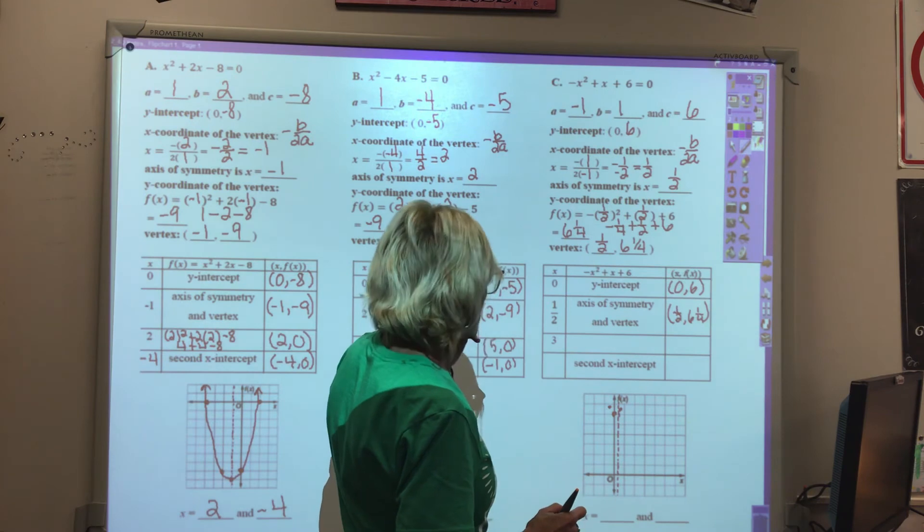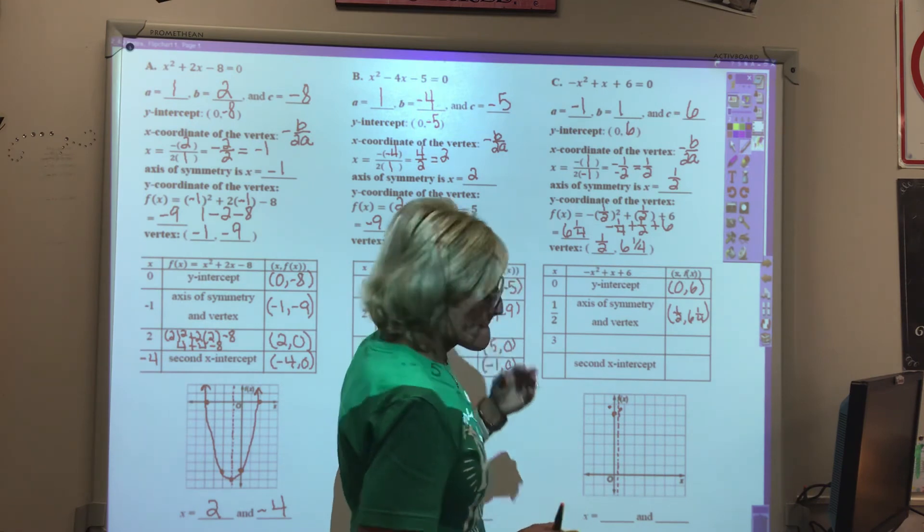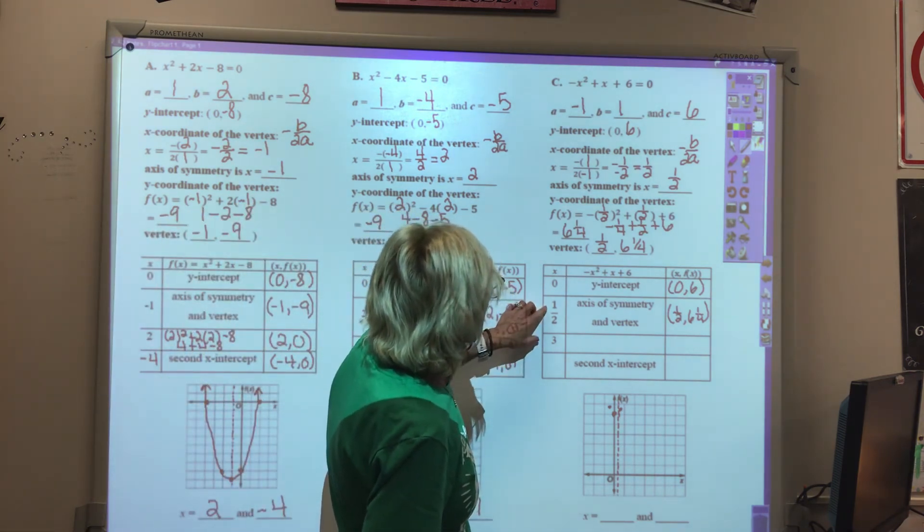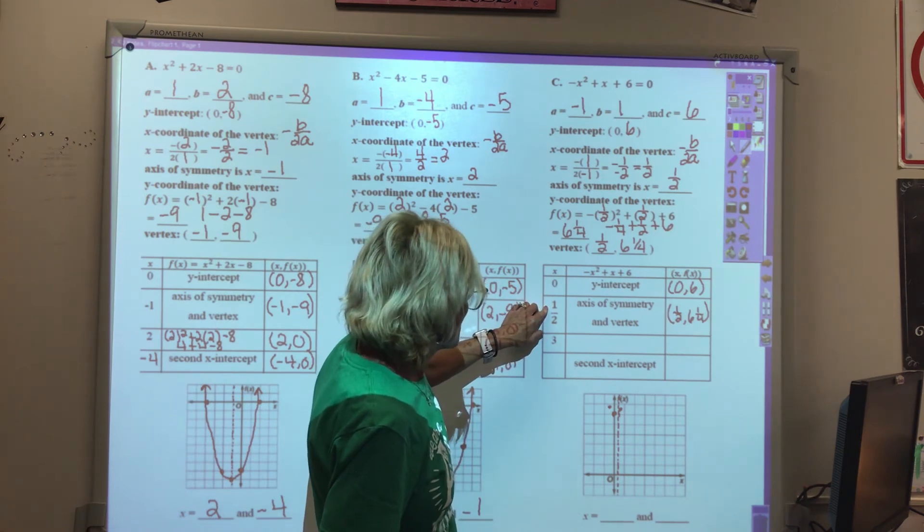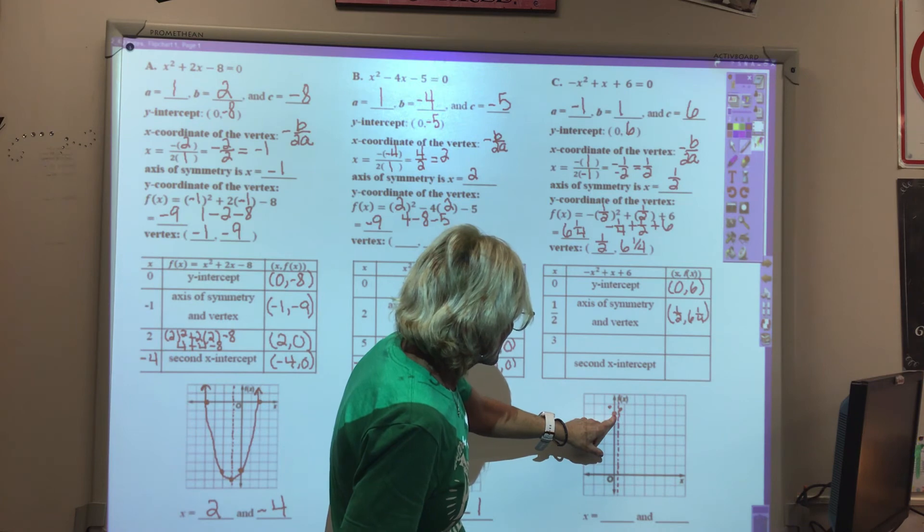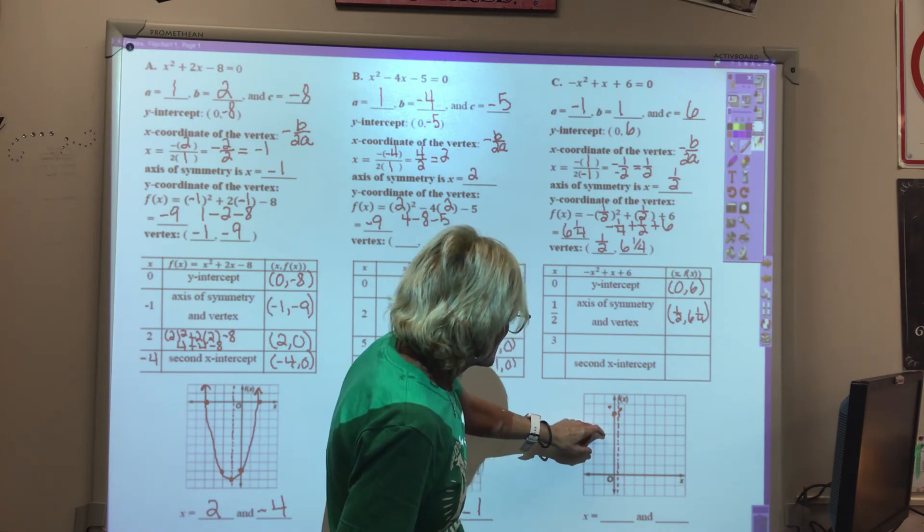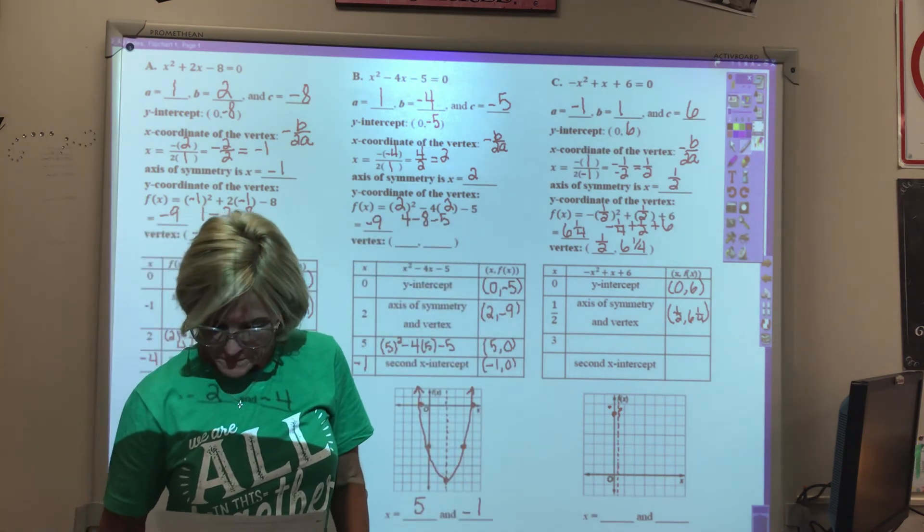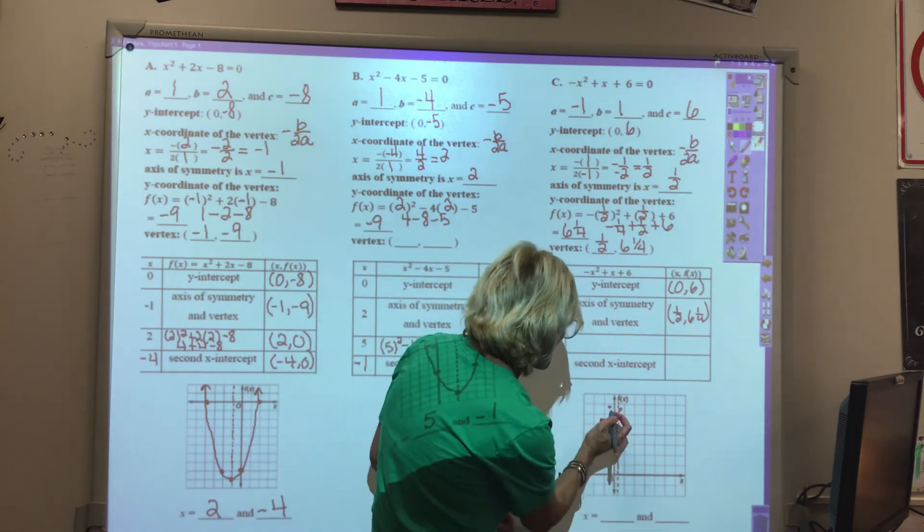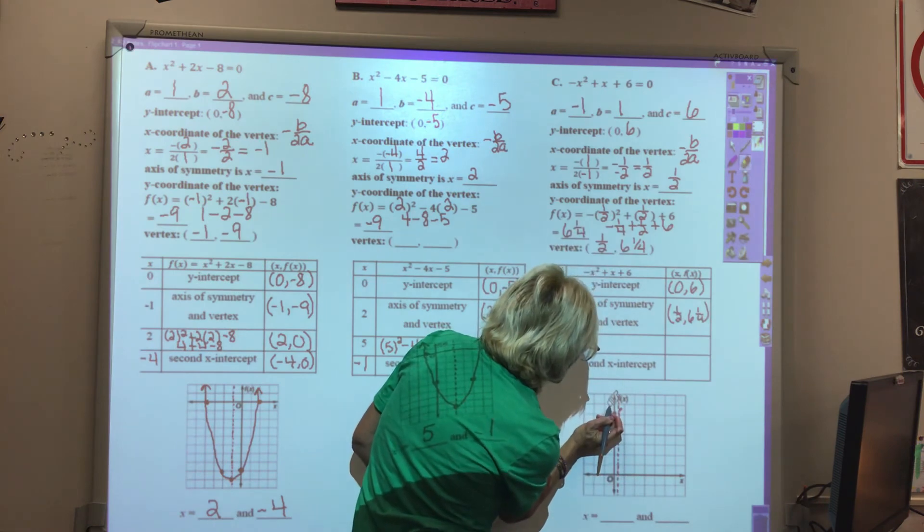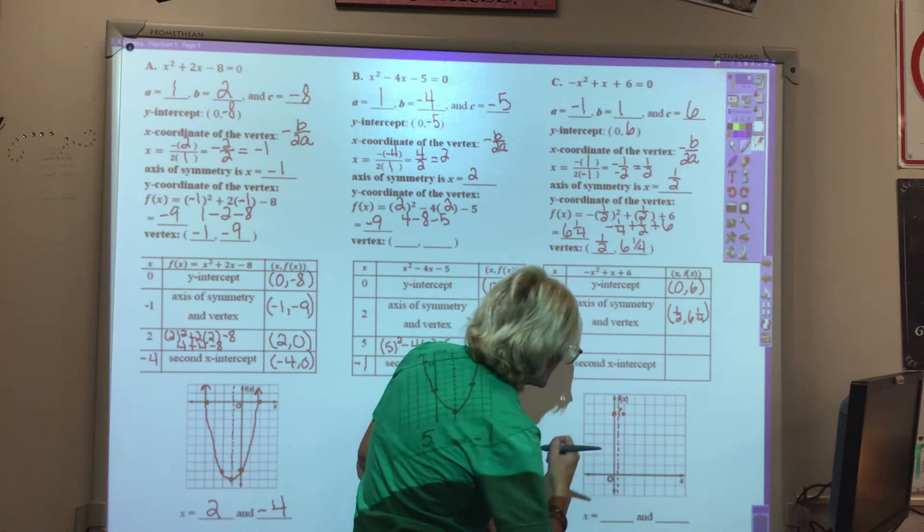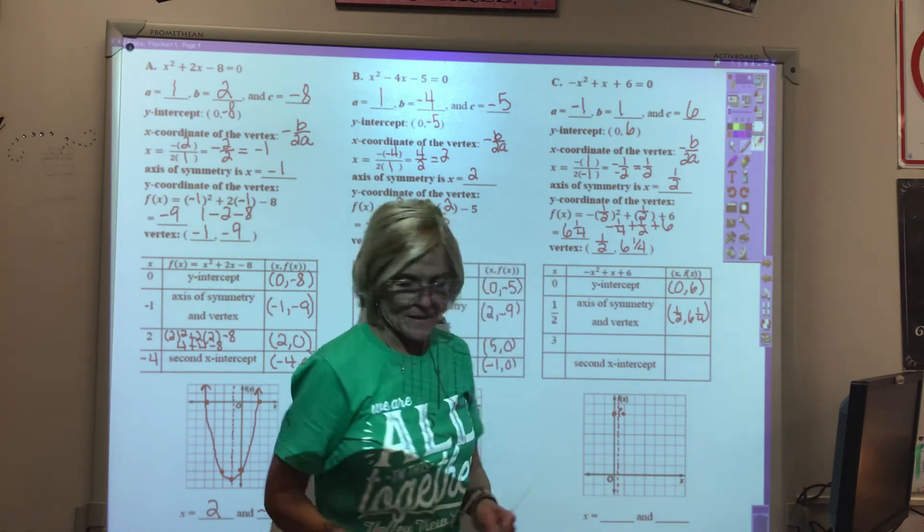It looks like I may have something off on this one, because it should open down. I'm not seeing it. Let me check. Oh, I see where I'm off. Maybe y'all had already recognized this. I put a point right here next to where the vertex is, rather than putting it on this side of the axis of symmetry. That's why I'm off. Now we're back on track.